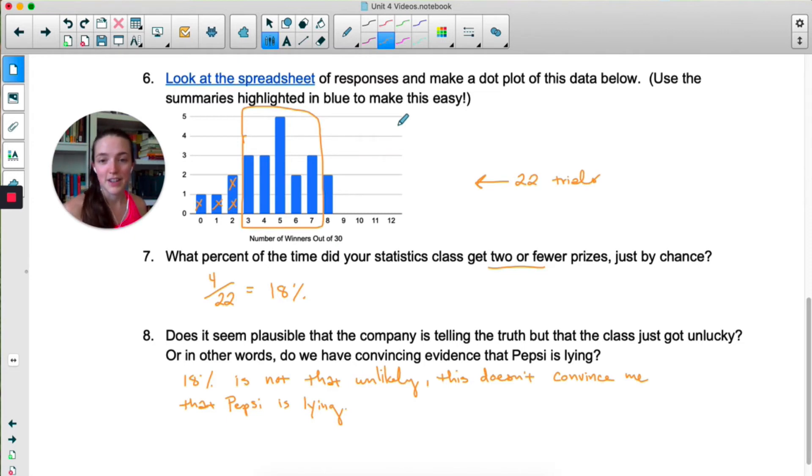Number eight asks us if we have convincing evidence that Pepsi is lying. Now for me personally, 18%, it's small but it's not that unlikely. So at the time of filming, based on the data I have, this does not convince me that Pepsi is lying. I think our class just got a little bit unlucky. It is possible to get two or fewer winners in a class of 30. There's an 18% chance that could happen.